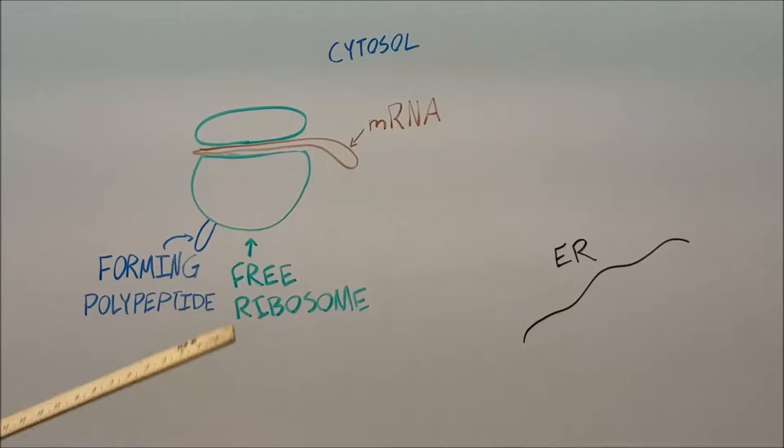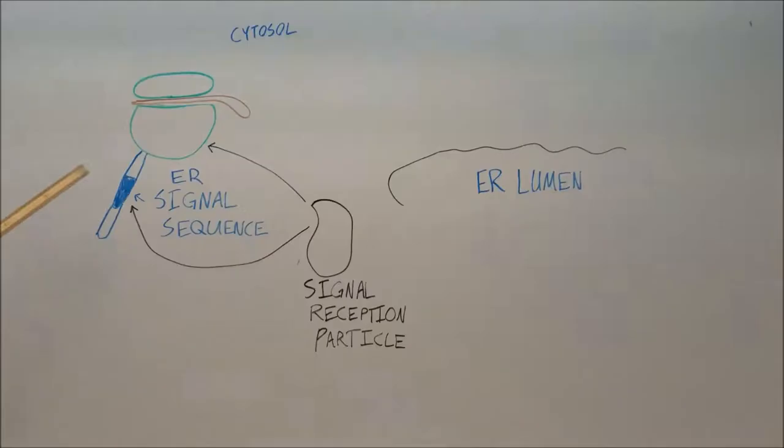To begin the process, you have a free ribosome floating around the cytosol, and messenger RNA is being translated into a forming polypeptide.